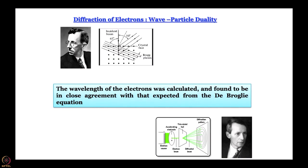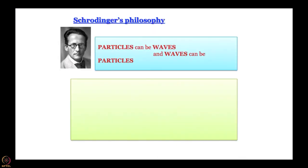For electrons in both the Davisson-Germer and G.P. Thompson experiments, the wavelength that was calculated turned out to be in very close agreement with what we expect from the de Broglie equation. This is the vindication of de Broglie theory — the experimentally observed result matches very nicely with what de Broglie theory predicts. With all this background, Schrödinger tried to develop a treatment for atomic structure.